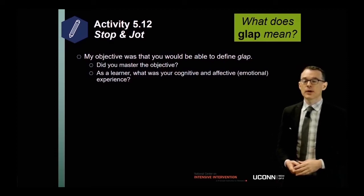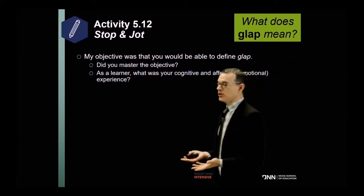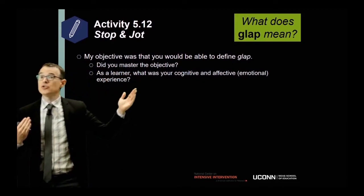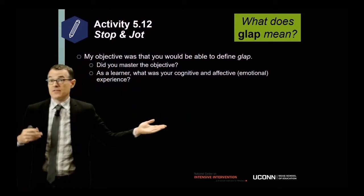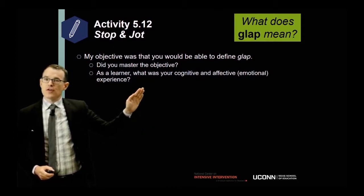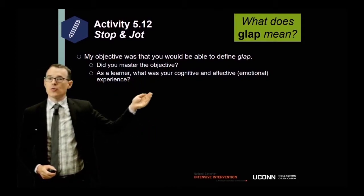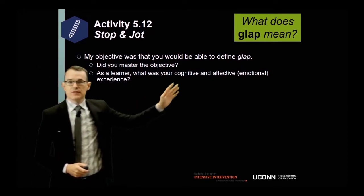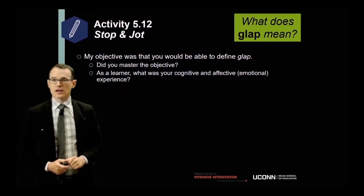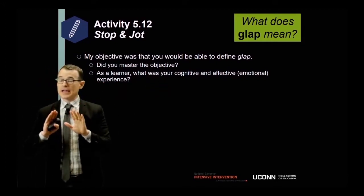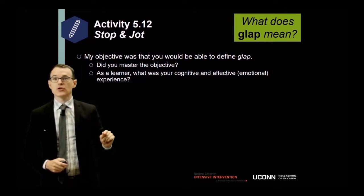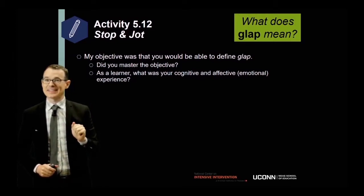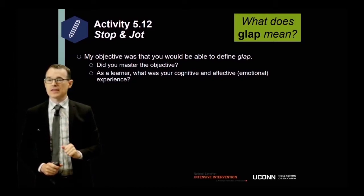Now I want you to do an activity — stop and jot. In your workbook, write about the objective I had and whether or not you mastered it — did you get what I intended, which was the definition of glap? But not only that, reflect on the experience as a learner: what was your cognitive and affective experience? How did it feel? What were you thinking as you did it? Go ahead and write your thoughts. Pause the video and we'll come back together when you're finished.